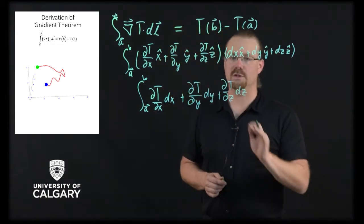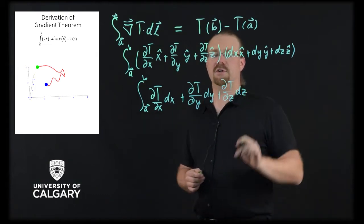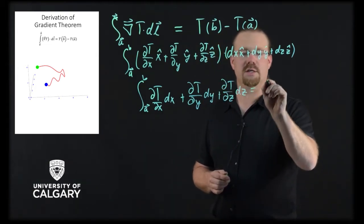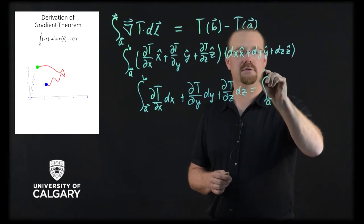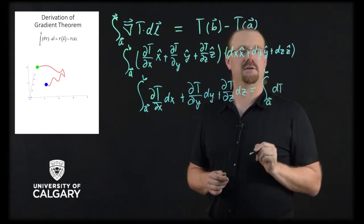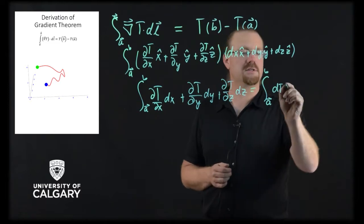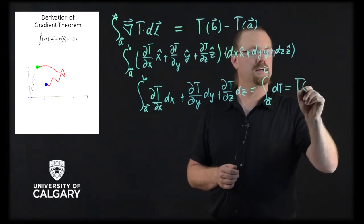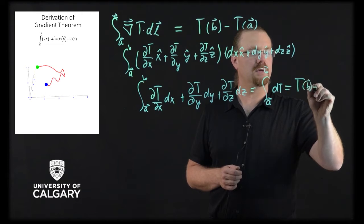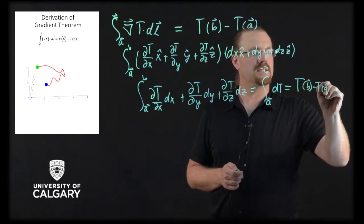And because these are the only variables that this depends on, we can now say that this is the exact differential dT. So this is simply T(b) minus T(a).